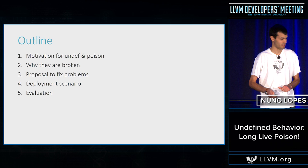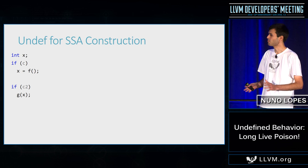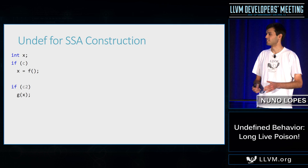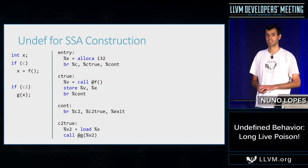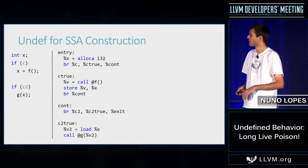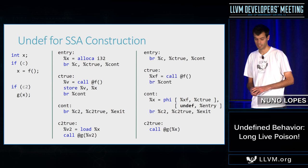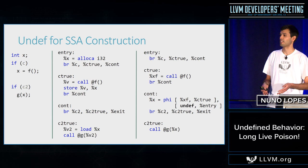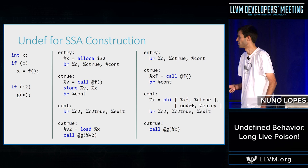Let's take a look at undef first. Here we have a very simple example in C where X is only initialized in one of the branches. If you compile this with Clang, we get the following IR — loads and stores. And if you run our SROA, we get the following IR with a phi node, and on the branch where X was not initialized, we get undef, because we don't know exactly what to put there.